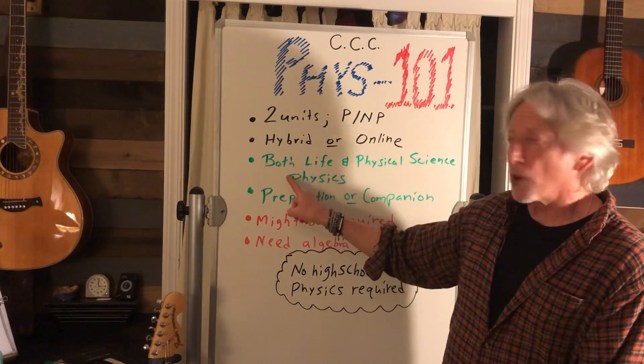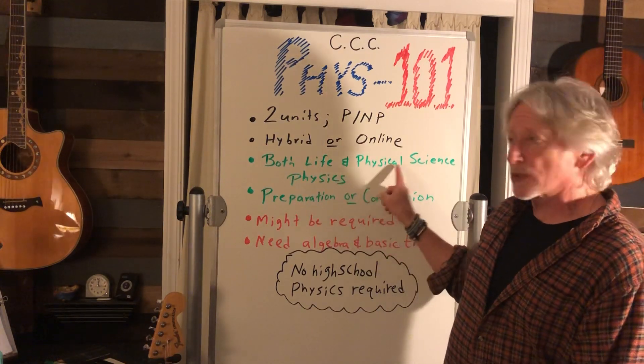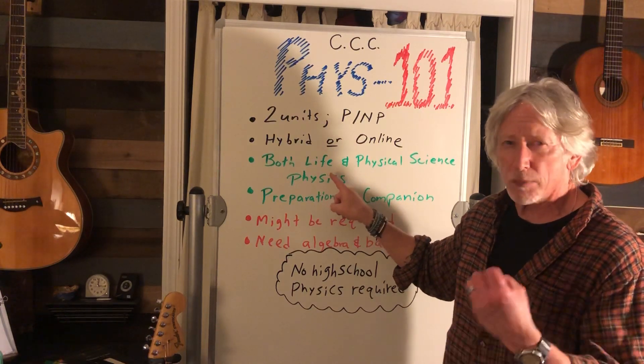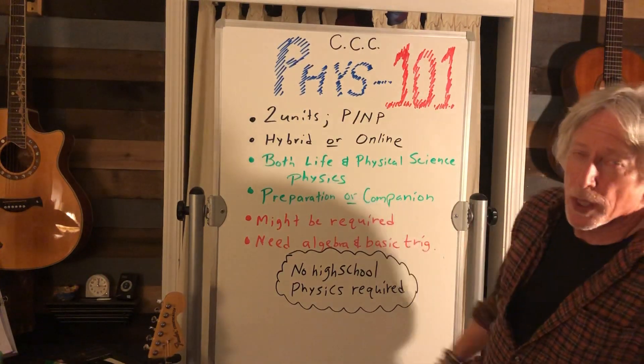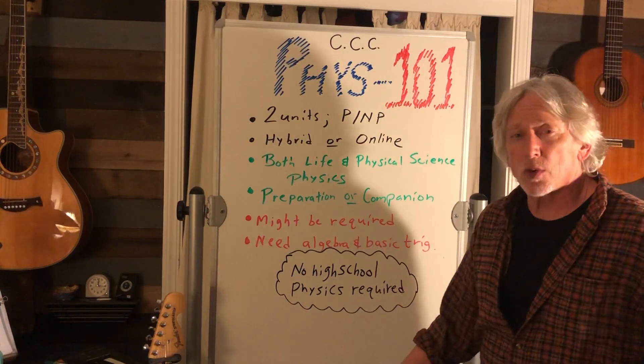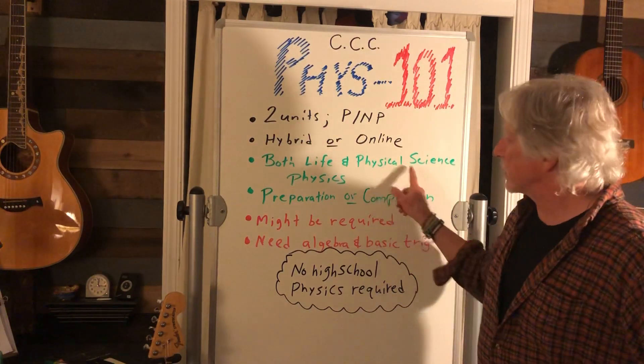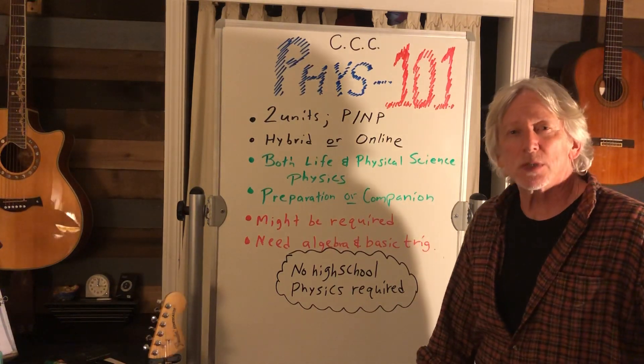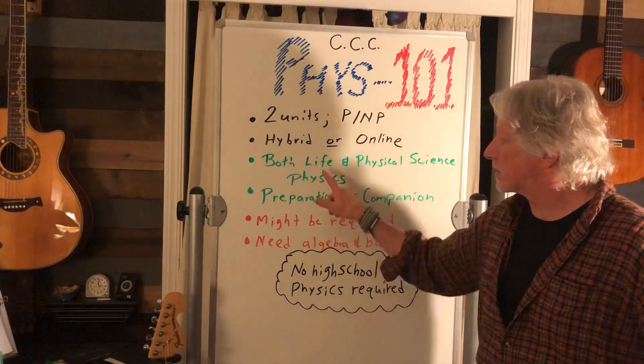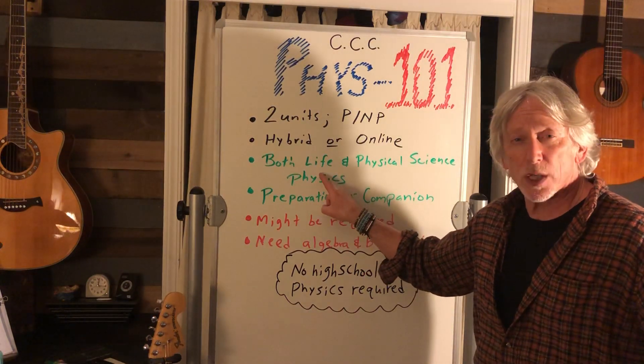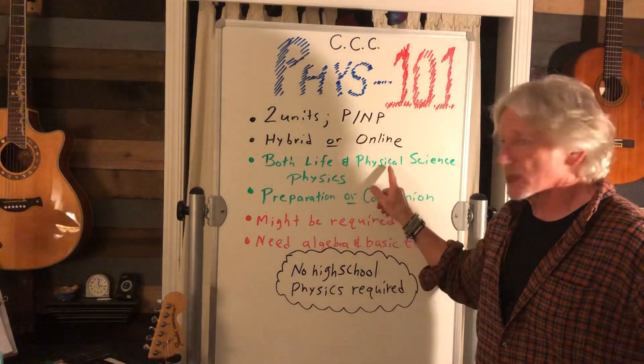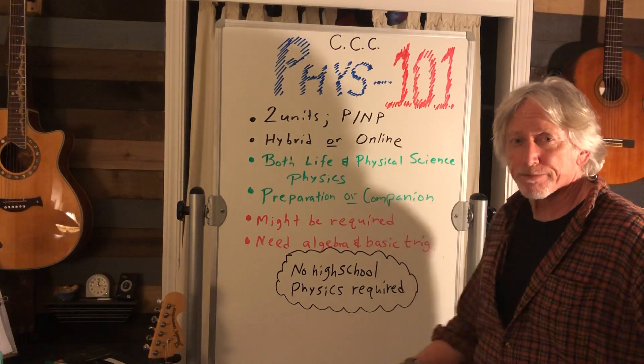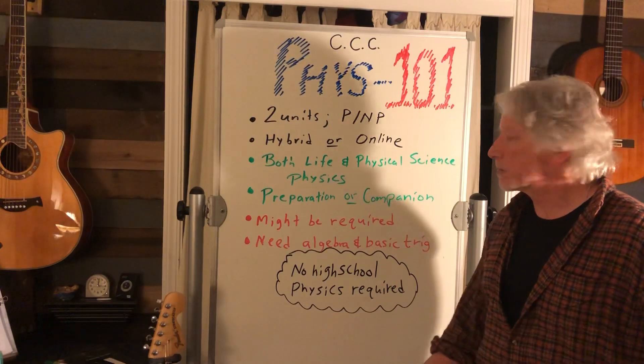This course is for both the life and the physical science. Physics life if you're going into pre-med, biology, nursing, and you need to take physics courses with algebra and trigonometry. Physical science engineering in the physics with calculus series at Contra Costa College. This is physics 120 and 121, this is physics 130, 230, and 231, and pretty standard elsewhere.